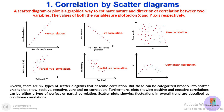In partial positive correlation, with a change in tail length there is an increase in wing length — a positive trend, but values are scattered and not exactly on a straight line. Similarly, partial negative correlation shows a negative trend but with scatter. For zero correlation, body weight correlated with IQ shows all values scattered throughout, indicating no correlation.